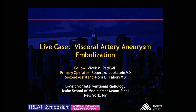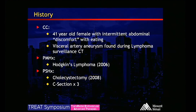We have an interesting case here: a visceral artery aneurysm embolization. This is a 41-year-old female with intermittent abdominal discomfort with eating. She also has a history of lymphoma, and on her surveillance CT, a visceral artery aneurysm was found.